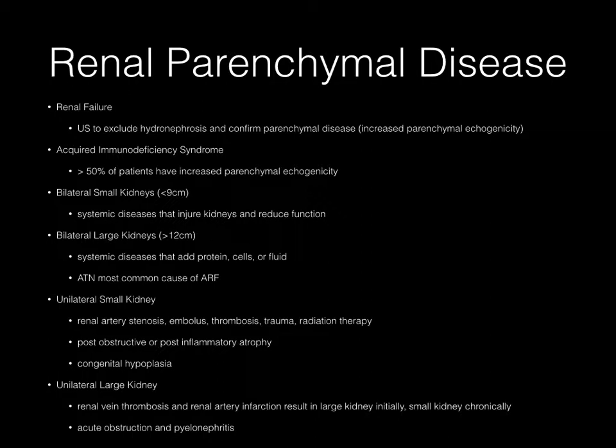Other causes of a unilateral small kidney include post-obstructive or post-inflammatory atrophy, and congenital hypoplasia. A unilateral large kidney should prompt consideration of renal vein thrombosis and renal artery infarction in the acute phase — although eventually the kidney becomes small — as well as acute obstruction and pyelonephritis.